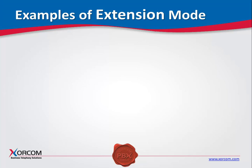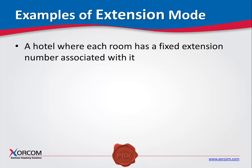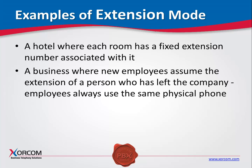Here are some examples of endpoints for which extension mode should be defined. First, telephones in hotel guest rooms — the room number corresponds to the extension number, which doesn't change when the guest checks out, but rather remains fixed. Second, in a business where a new employee assumes the role and telephone number of his or her predecessor, the physical phone and its number are fixed.